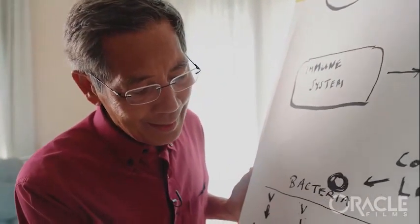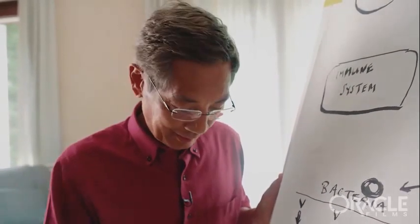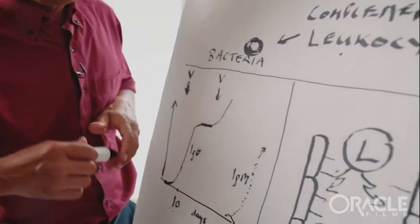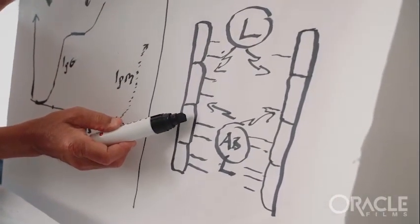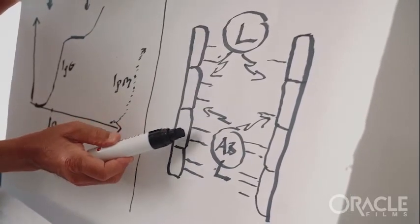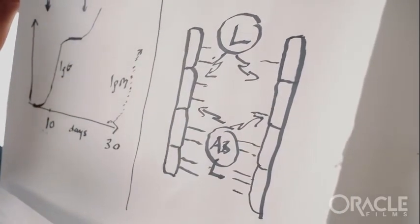Now what happens when the cells that line the vessel walls begin to produce these spikes? The spikes will then be produced by the cell and protrude from the cell surface into the bloodstream.